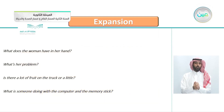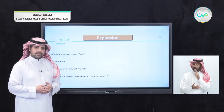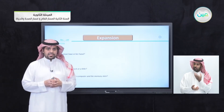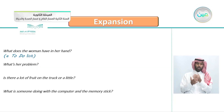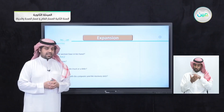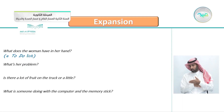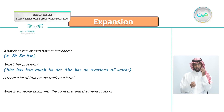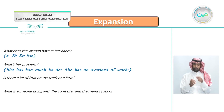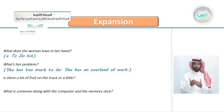What does the woman have in her hand? Look at the picture — what does she have and why does she seem so surprised? Yes, a to-do list — a lot of to-do list actually. What's her problem? Why does she seem confused? She has too much to do. She has an overload of work.